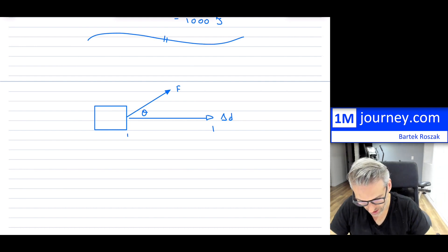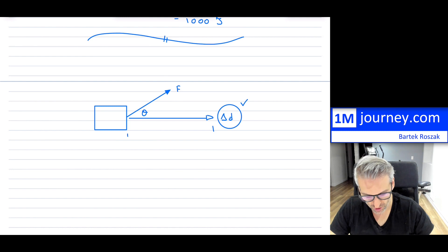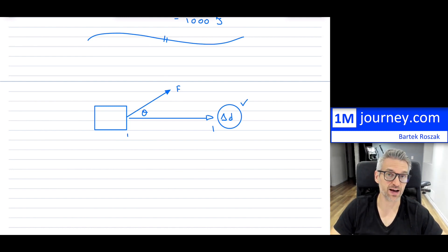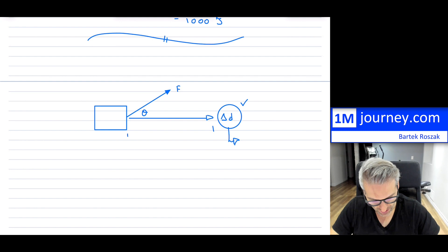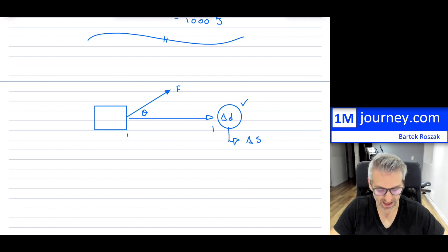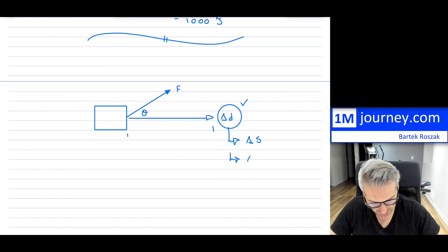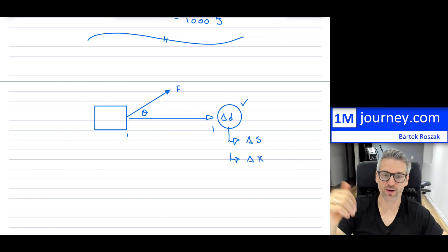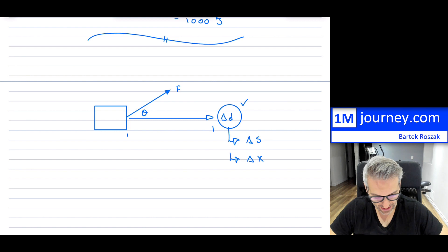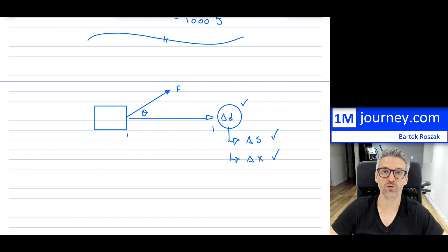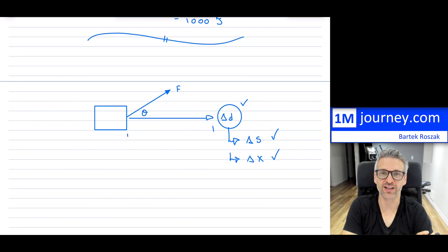I'll also remind you that for displacement, although I've been using D, delta D typically means displacement. As you get into physics, this can also be written with an S — a spatial movement between two particular points — or as X when referring to the x-direction, and sometimes delta Y in the y-direction instead of D. Be aware of that as you're watching other videos and studying concepts so you don't get thrown off. That's it for now with regards to work — we'll see you in a future video.